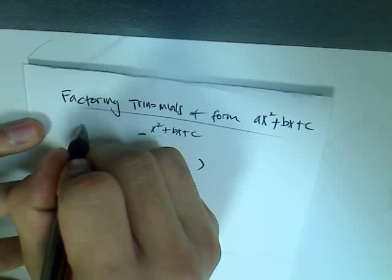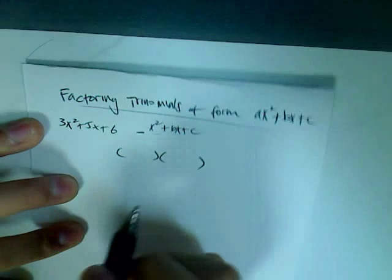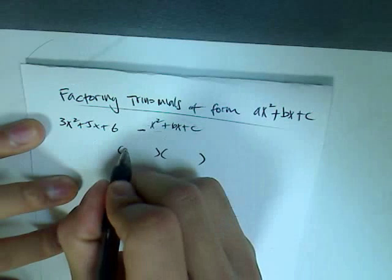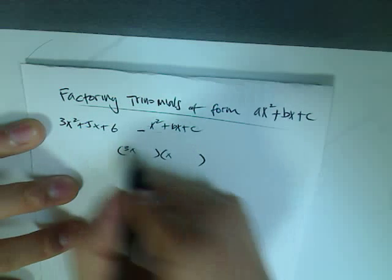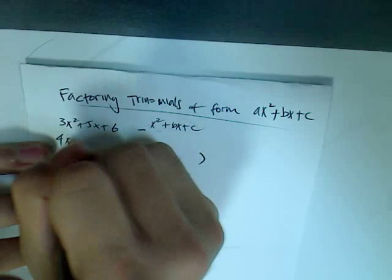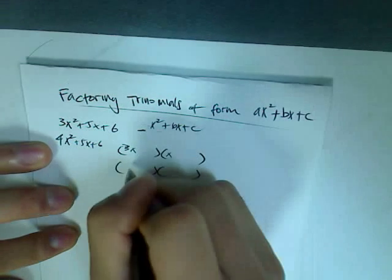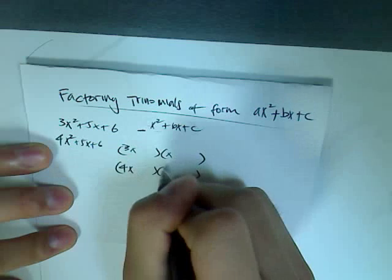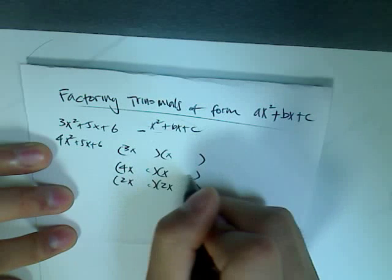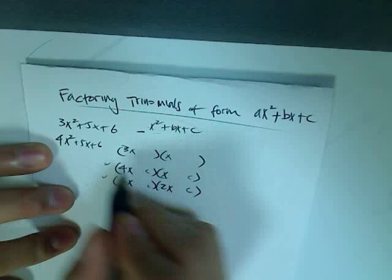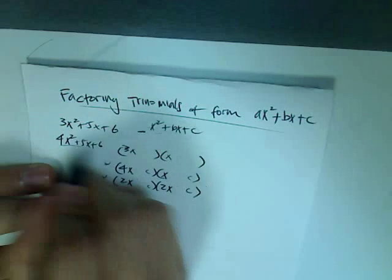For example, when you have 3x squared plus 5x plus 6, you can either put a 3x in front of one factor or an x in front. That's basically all the variations you can have. But if you have 4x squared plus 5x plus 6, then you can have either a 4x and an x, or a 2x and a 2x. You would have to guess and check both of these to see which one multiplies back to the original polynomial.